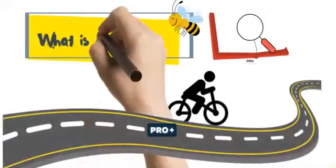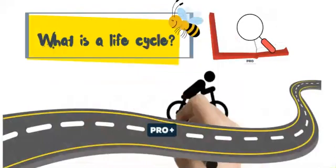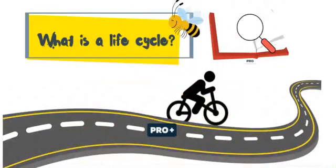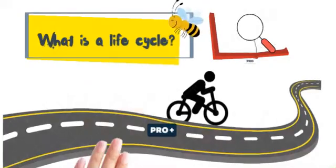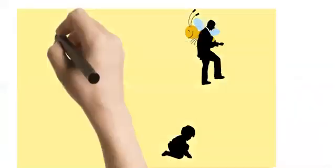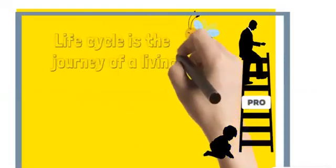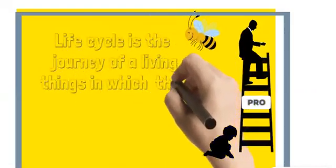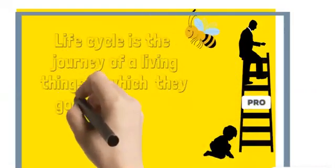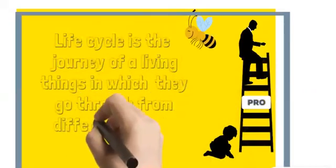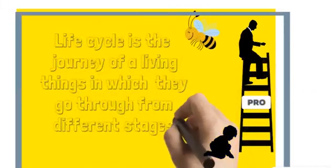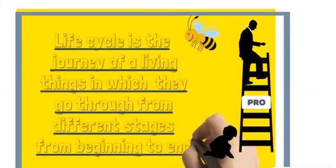Let us understand first: what is a life cycle? A living thing moving on a bicycle? No. A life cycle is the journey of a living thing in which they go through different stages from beginning to end.